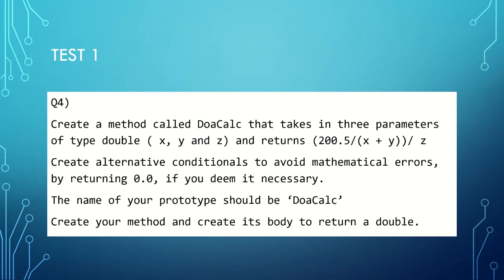This is question four, and I myself have adapted this question. The base question you'll get around arithmetic in Java will be extremely simple. The original question around this said create a method called doACalc that takes in three parameters of type double and returns this sum right here, this equation. It didn't say any of this, it just gave you your function prototype and asked you to do that, which I thought was extremely boring. So I've asked you to create alternative conditionals to avoid mathematical errors by returning 0.0 if you deem it necessary. If you think any mathematical errors can be formed out of that, do create a conditional to return 0.0 if that's the case. The name of your prototype should be doACalc - create your own function prototype and create this body to return a variable of type double.